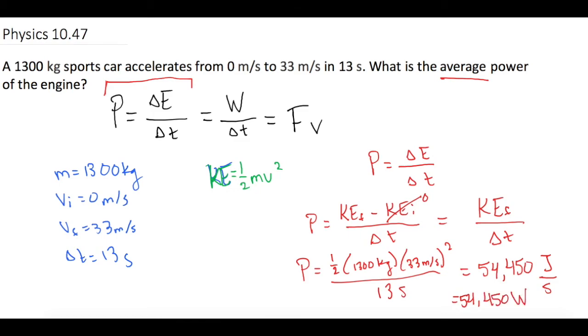But Mastering Physics, they don't want just normal watts, they want kilowatts. So of course we're going to move the decimal place over three places. Let me rewrite it up here where we have a little more room. Power is equal to 54,450 or 54.45 kilowatts.